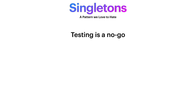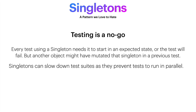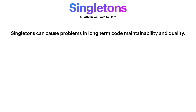One more problem: testing singletons is practically a no-go. Every test that uses a singleton needs it to start in an expected state, or else the test will fail. But another object might have mutated that singleton in a previous test. Next, singletons can slow down test suites as they prevent tests from running in parallel. And finally, if you add a new test that runs in the middle of the suite, another test that runs after it may fail.